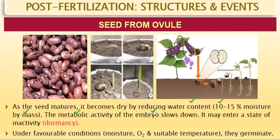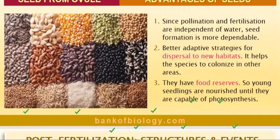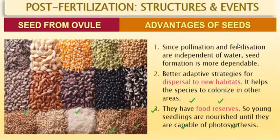Under favorable conditions — proper moisture, sufficient oxygen, and suitable temperature — the mature seeds are able to germinate. The dormancy stage is where seeds are inactive due to the absence of proper metabolic activity in the embryo.